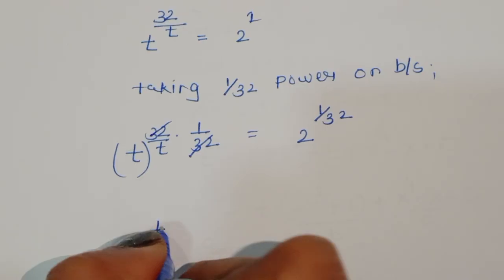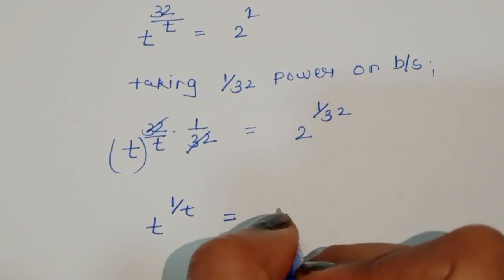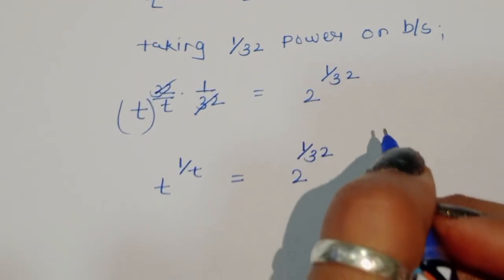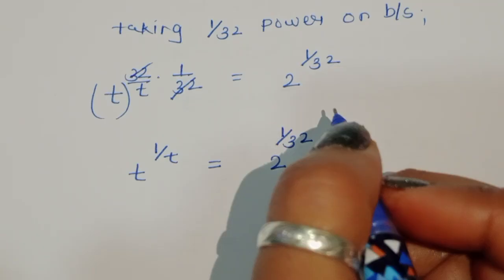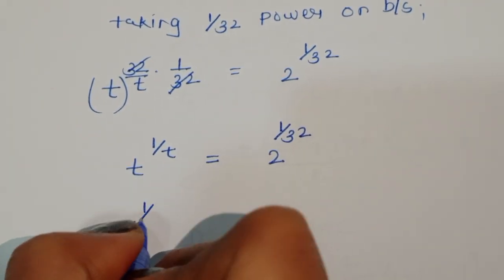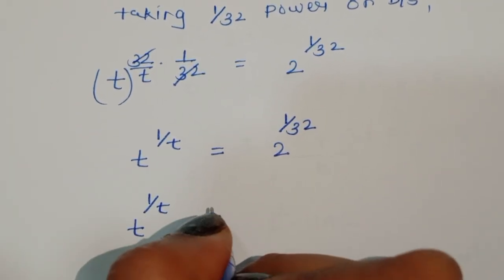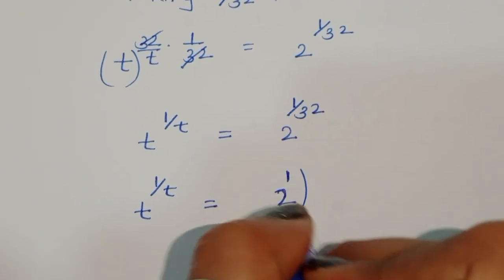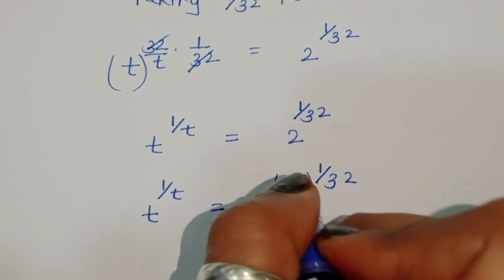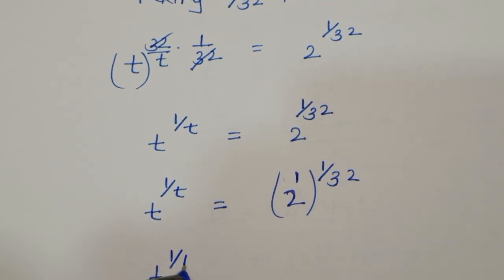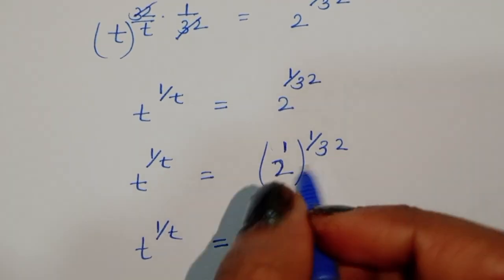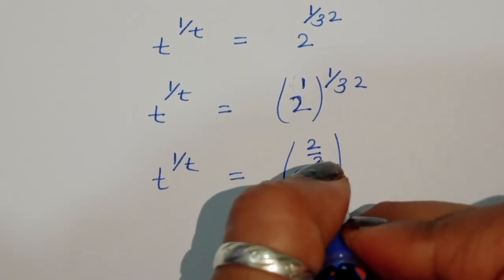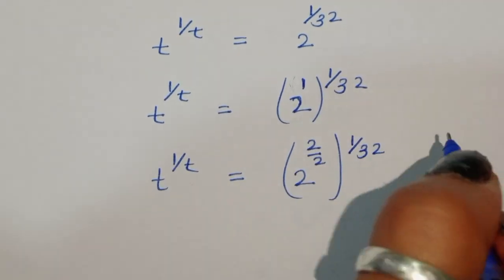So we can write here t power 1 upon t is equal to 2 power 1 upon 32. In the next step we can write t power 1 upon t is equal to 2 power 2, and here 1 upon 32 as it is.